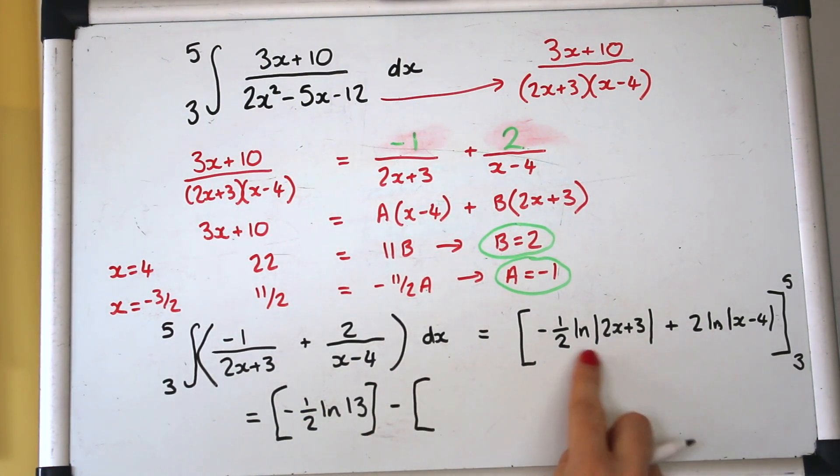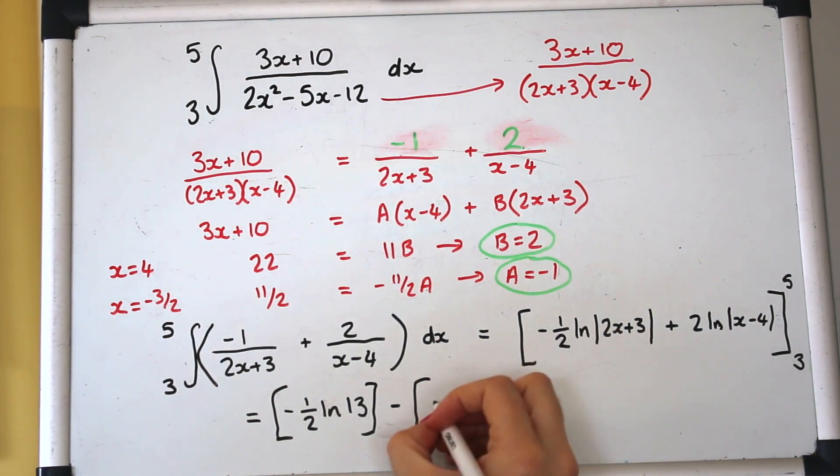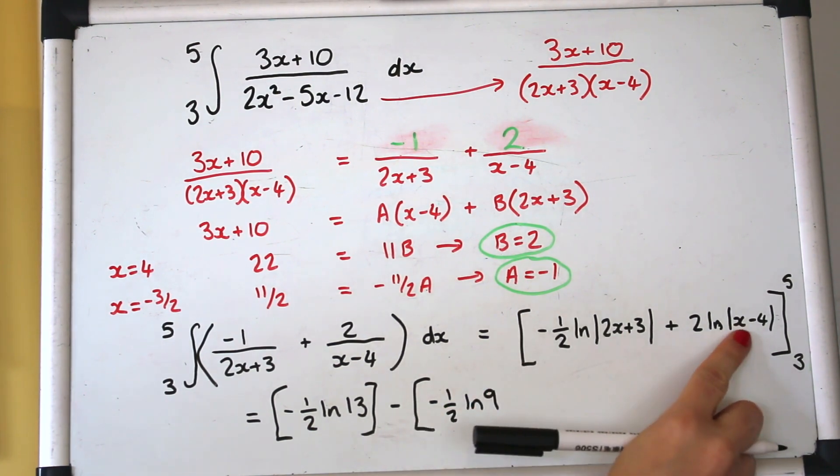The second limit so putting it in here 2 times 3 plus 3 is 9 minus a half log of 9 and then 3 minus 4 would give us minus 1.